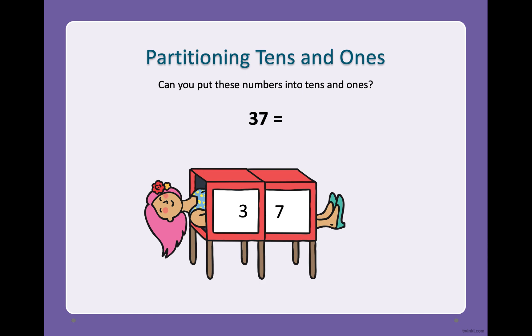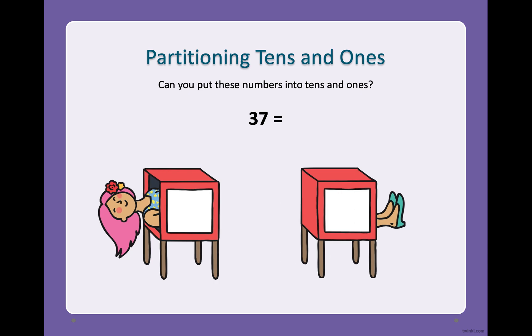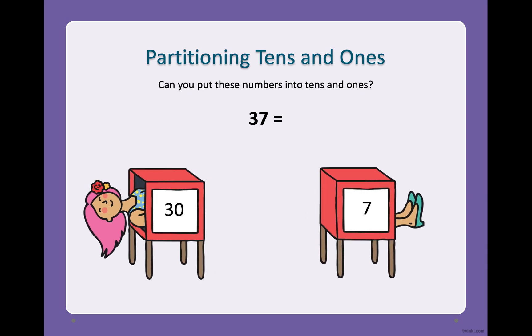Tens and ones. Can you put these numbers into tens and ones? So we have the number 37. Now we need to see how to put it into tens and ones. So the first number is always our tens which is 30. The second number is always our ones which is seven. That makes 37.